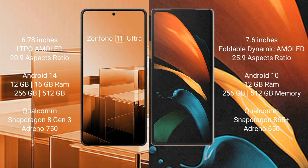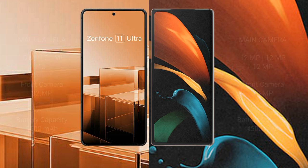Asus Zenfone 11 Ultra comes with 12GB RAM, 256GB internal storage, Qualcomm Snapdragon 8 Gen 3 processor, and GPU Adreno 950. Samsung Galaxy Z Fold 2 comes with 12GB RAM, 256GB internal storage, Qualcomm Snapdragon 865 Plus processor, and GPU Adreno 650.